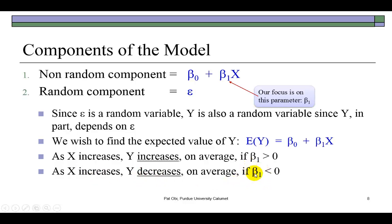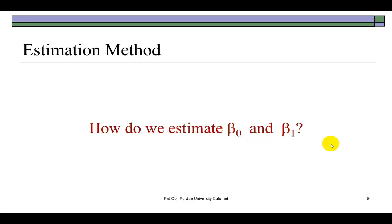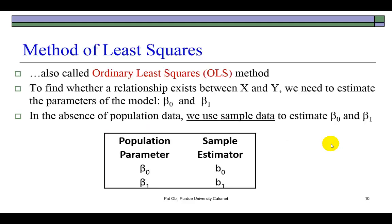The value that β₁ would take will give us a sense of by how much Y would change per unit change in X. If you're familiar with calculus, you would call that your first derivative. So the question therefore becomes: how do we estimate β₀ and β₁? Answer: it's called the method of least squares, also called the ordinary least squares method.